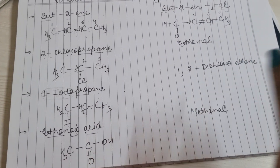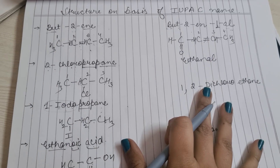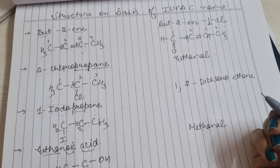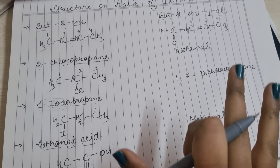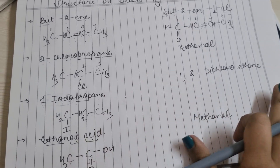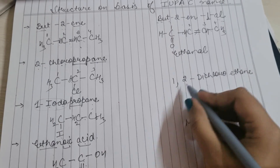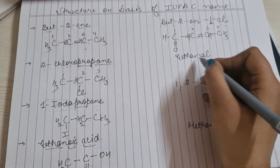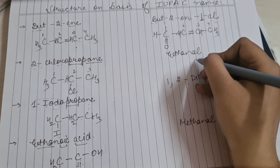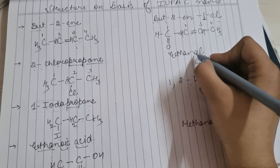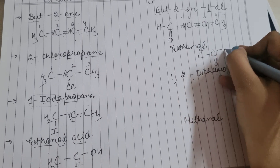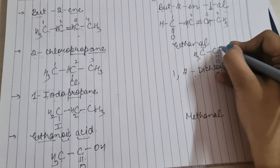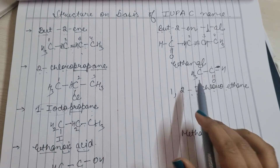Students घबराने की जरूरत नहीं — organic chemistry से डरो मत। Rules अच्छे से हो जाएंगे, practice करोगे तो सब हो जाएगा। Ethanal: 'ith' मतलब 2 carbon, 'al' मतलब aldehyde। Aldehyde लगाओ और hydrogen पूरे करो। This is the structure of ethanal।